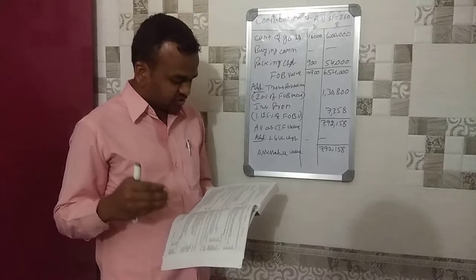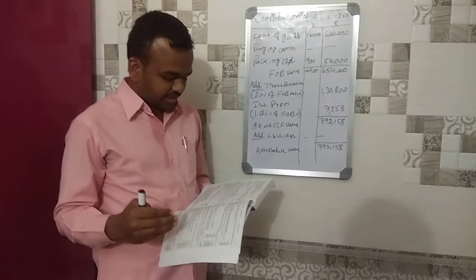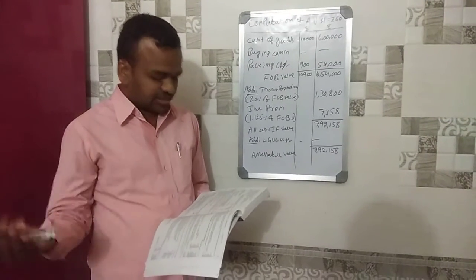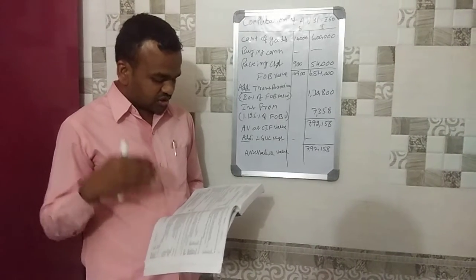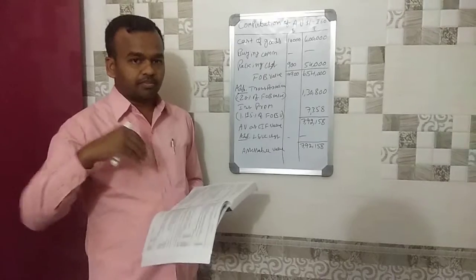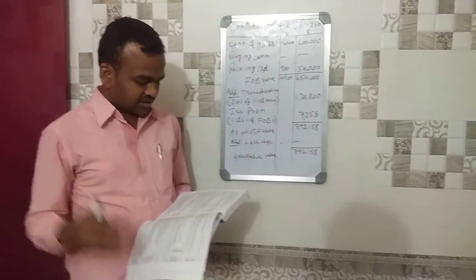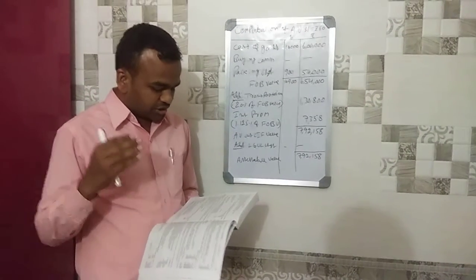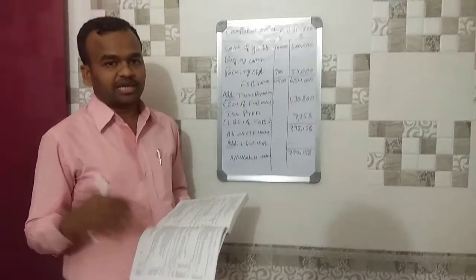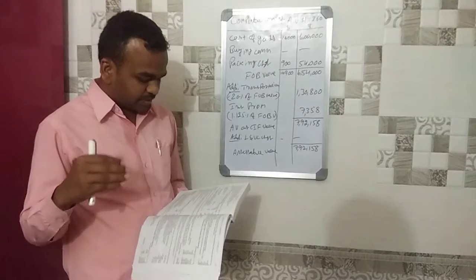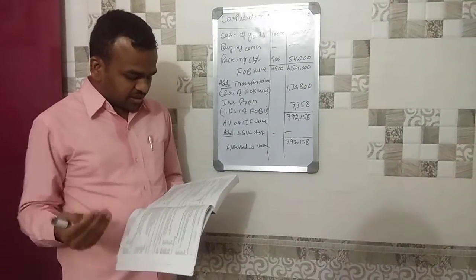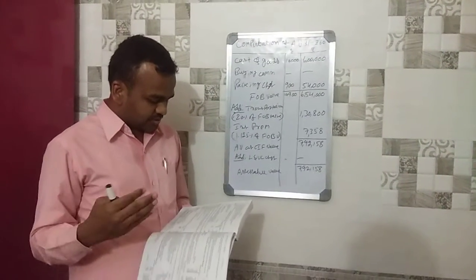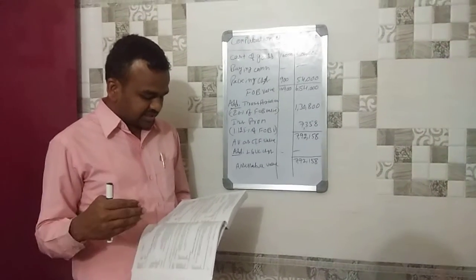Packaging charges: containers five hundred dollars, other packing materials one hundred dollars, labor charges three hundred dollars — totaling nine hundred dollars. Transportation charges to the Indian port are also given. Transit insurance premium is to be determined. Exchange rate declared by the RBI is sixty point two zero dollars, and the rate notified by the Board is sixty rupees per dollar.